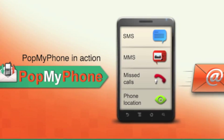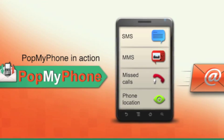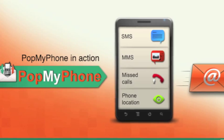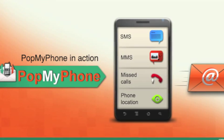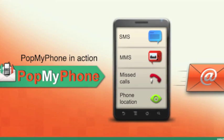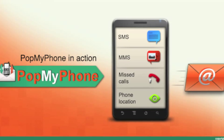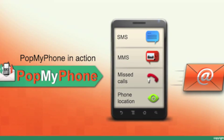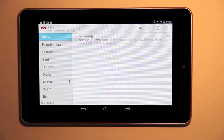Pop My Phone connects phone activity to email. You can see SMS, MMS, and missed call details simply by checking your email. You don't need to download any special application to your tablet — it just works. So let's have a quick look at Pop My Phone in action.